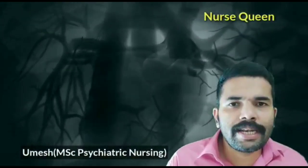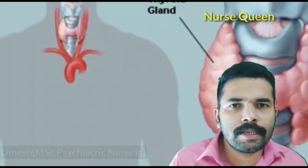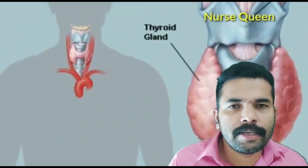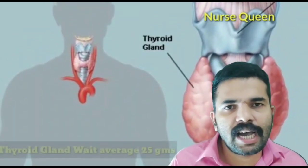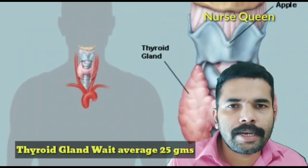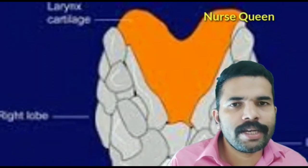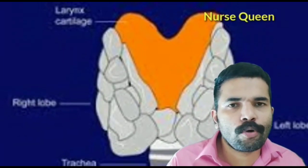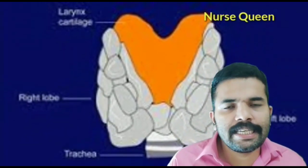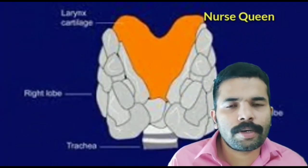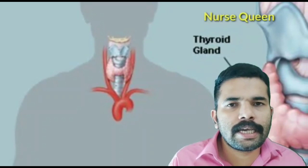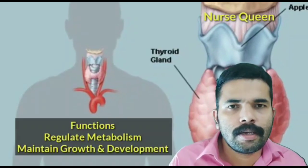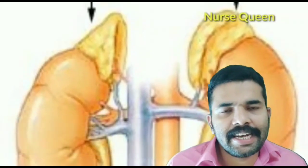The thyroid gland is a butterfly-shaped gland situated in front of the neck, below the Adam's apple. Its average weight is 25 grams. The thyroid gland secretes triiodothyronine (T3), thyroxine (T4), and thyroid-stimulating hormone. It helps the body regulate metabolism, growth, and development.